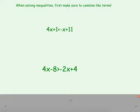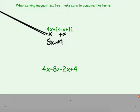Another example: 4x plus 1 is less than negative x plus 11. There's nothing else to simplify, so we go ahead and add x on each side to move our variables. We get 5x plus 1 is less than 11. Subtract 1 and we get 5x is less than 10, so we divide by 5 and see that x is less than 2.